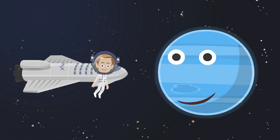This is Neptune. It is the farthest planet from the sun. Neptune is also the coldest planet along with Uranus.